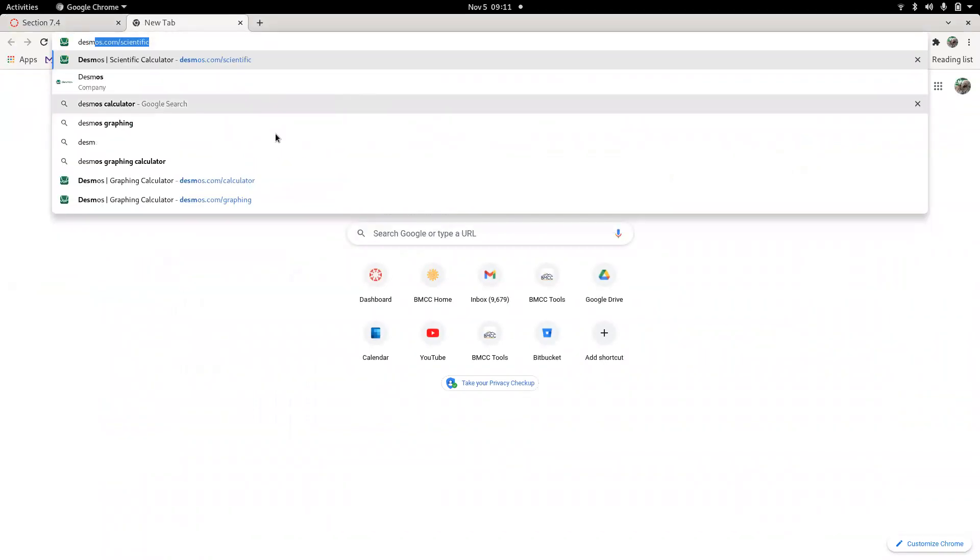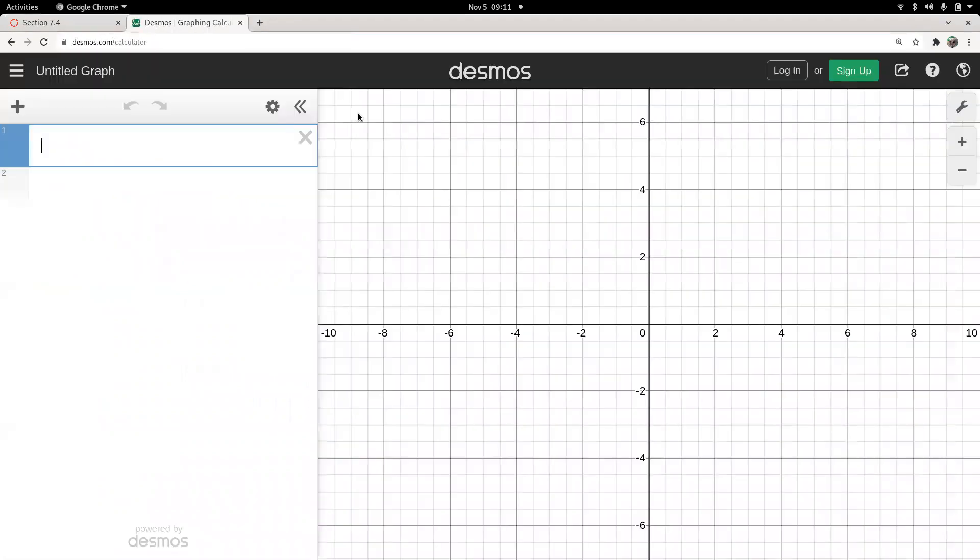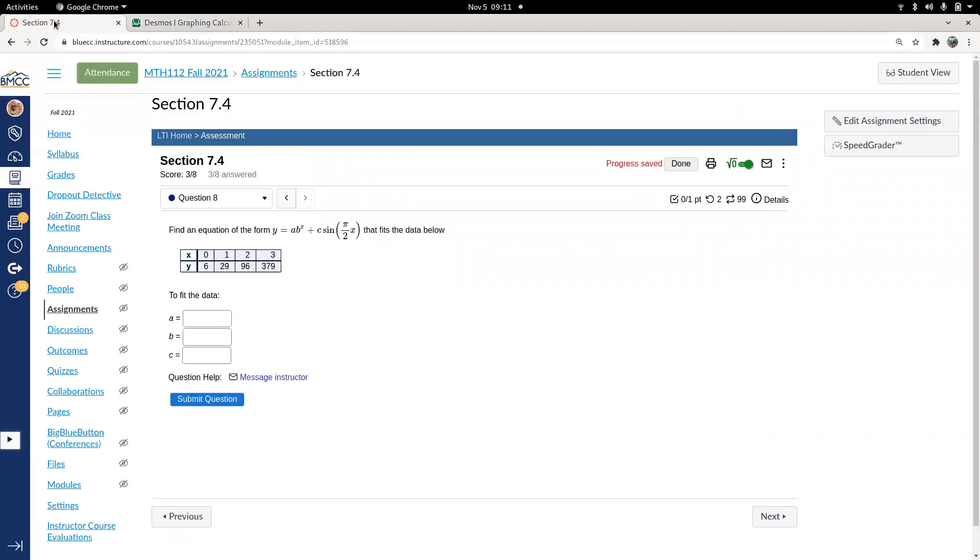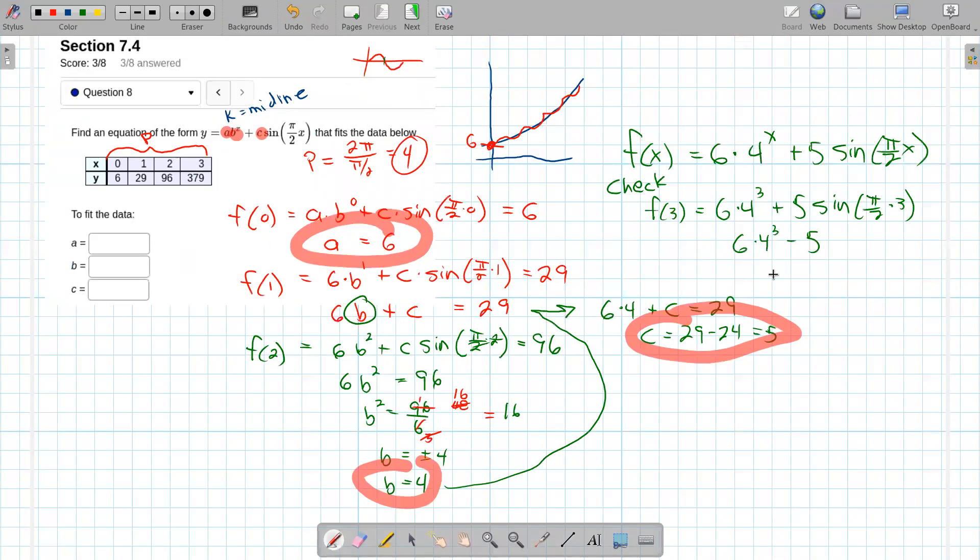Desmos calculator. So we had 6 times 4 raised to the third minus 5 is 379. Okay, so it checks out. So that is 379. That's exactly what I wanted it to be there.